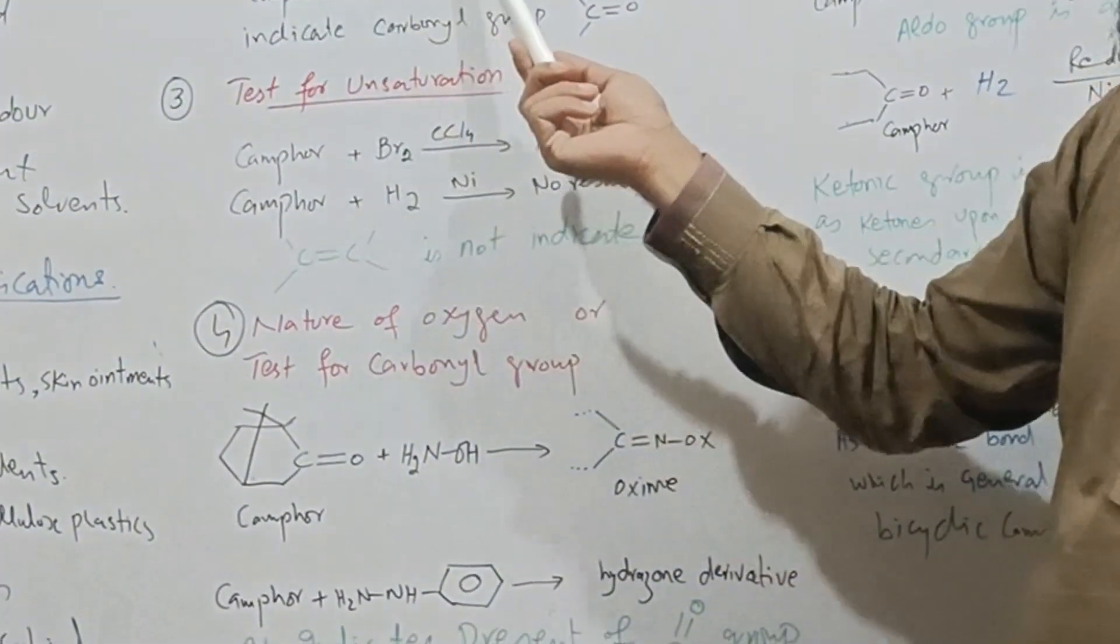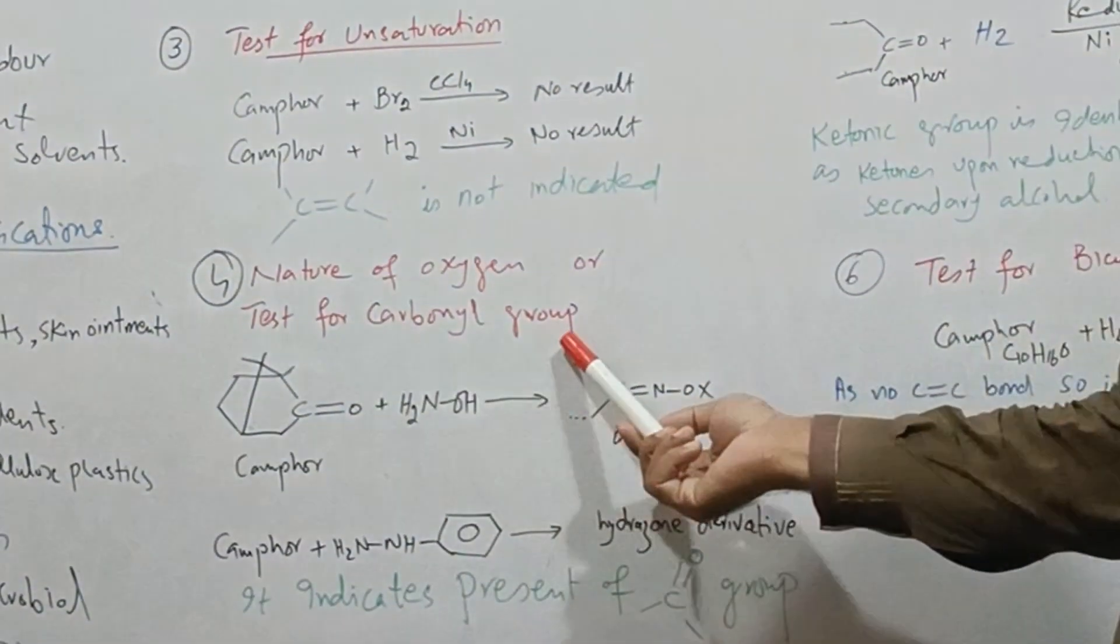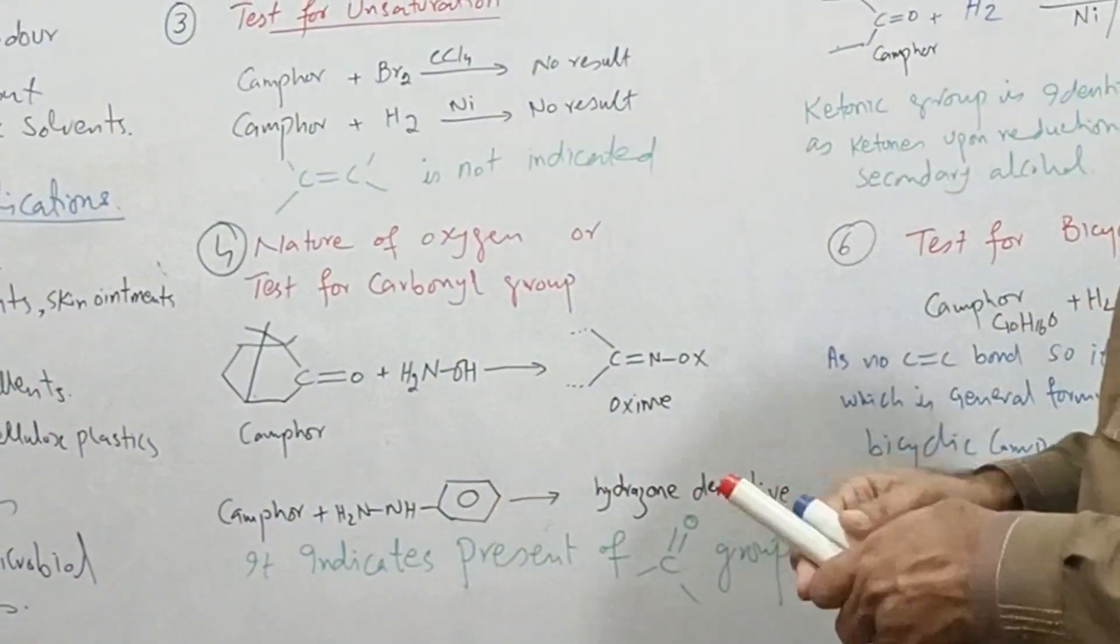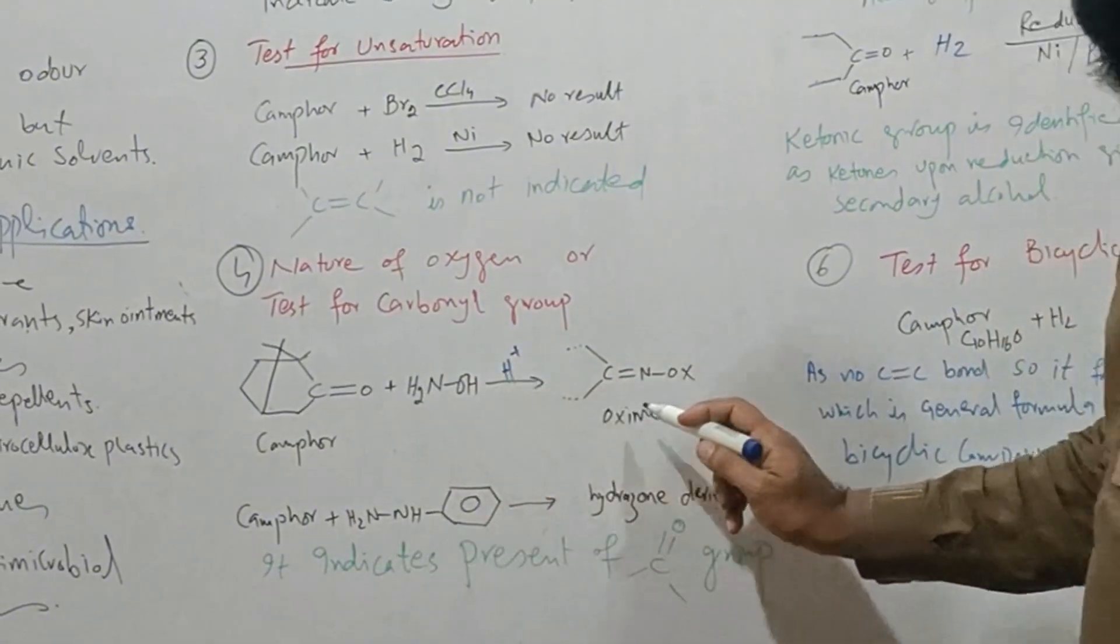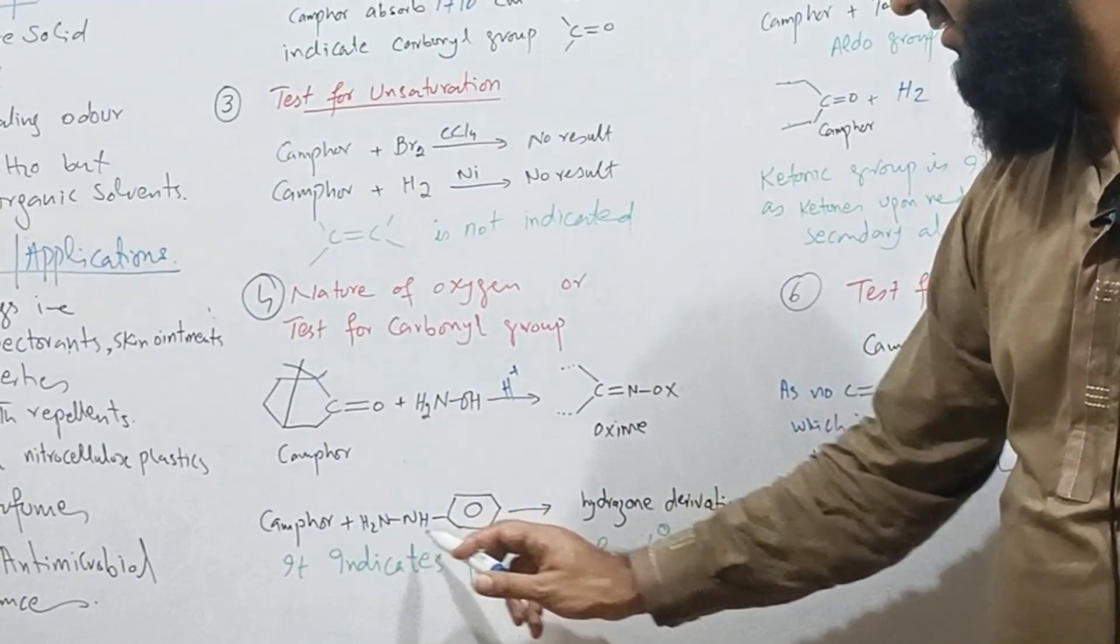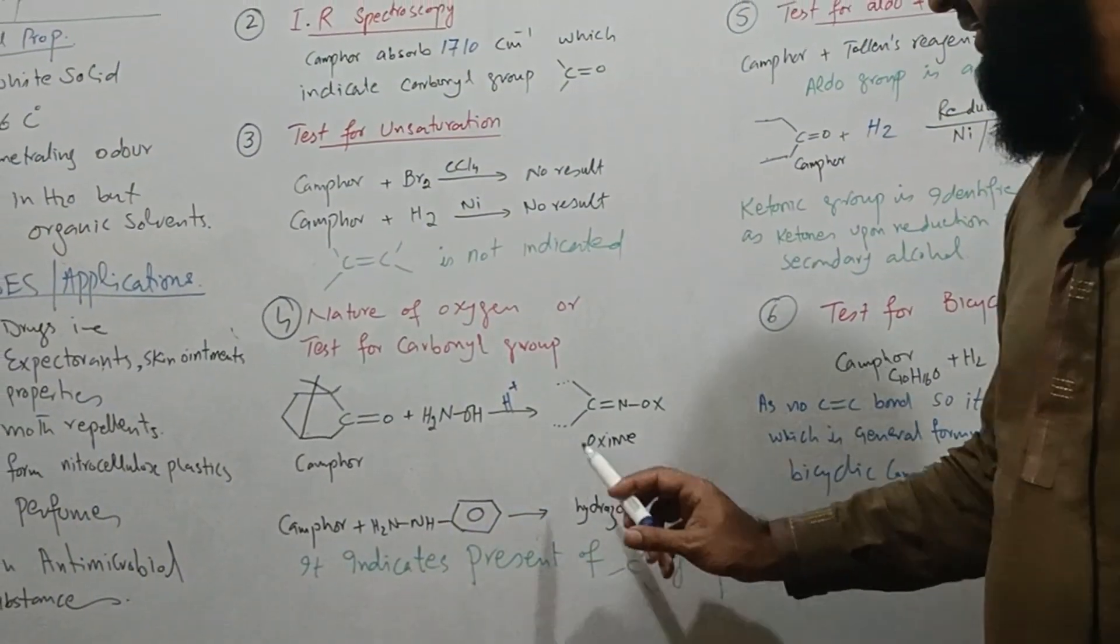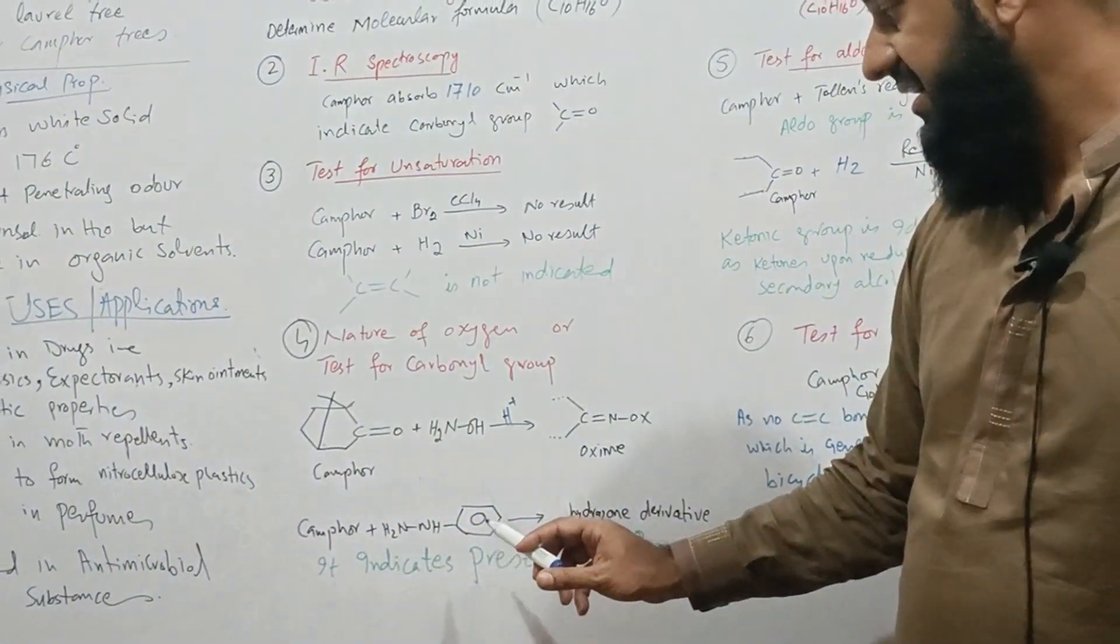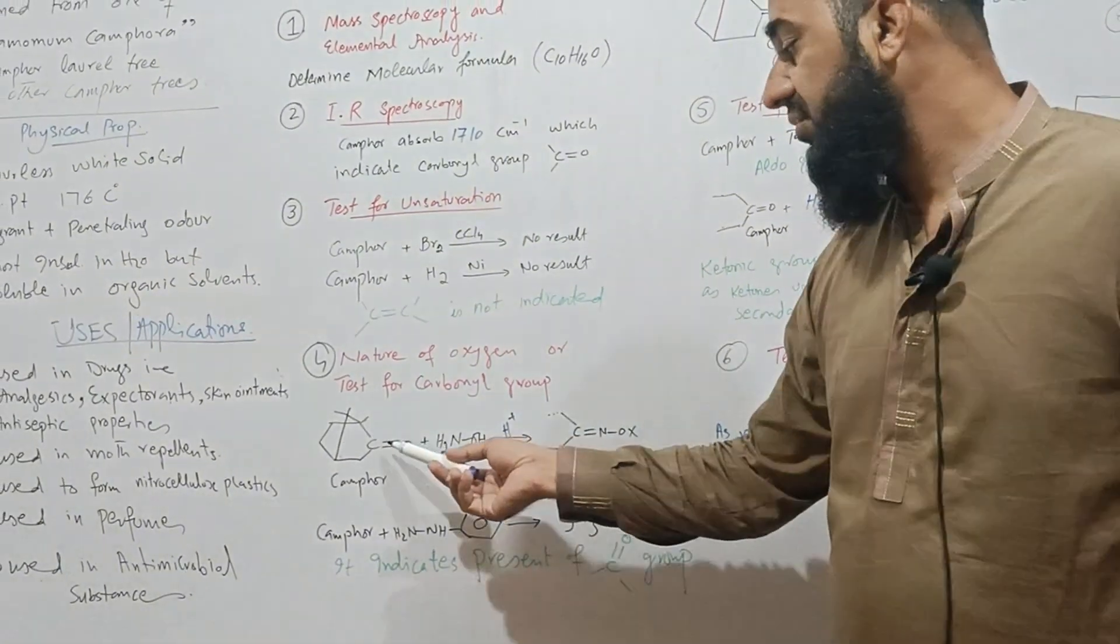So we perform confirmatory test for the carbonyl group. When camphor is treated with hydroxylamine in the presence of acid as catalyst, we obtain oxime derivative. Similarly, when camphor is treated with phenyl hydrazine, we obtain hydrazone derivative. Because hydroxylamine and phenyl hydrazine only condense or show reaction with those compounds which contain carbonyl groups, it indicates presence of carbonyl group.